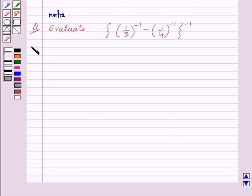Let's see its solution. We need to solve the expression: 1 upon 3 to the power minus 1, minus 1 upon 4 to the power minus 1, whole to the power minus 1.